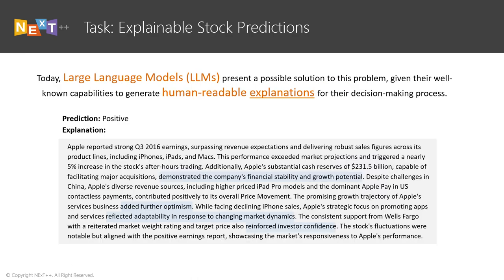Today, large language models, or LLMs, present a solution to this problem, given their known capabilities to generate human-readable explanations for their decision-making process. Here we show a stock prediction made by a LLM and its generated explanation. We see that in addition to highlighting the relevant information, the LLM also explained why these information helps to contribute to a positive prediction.